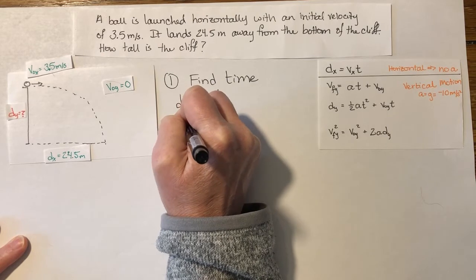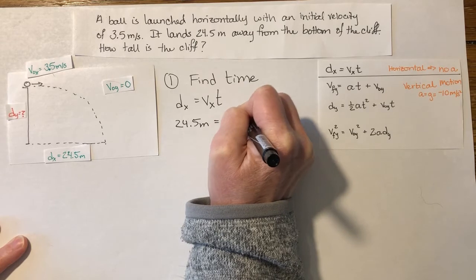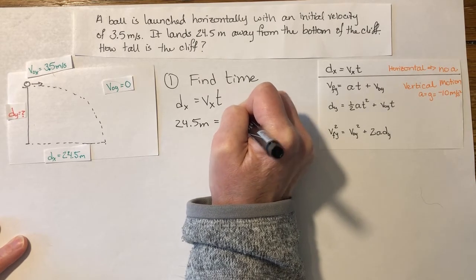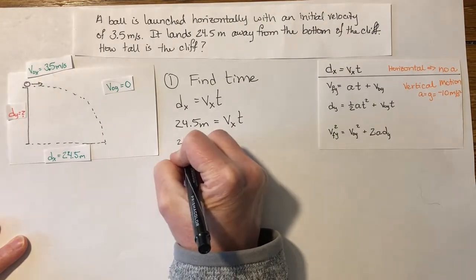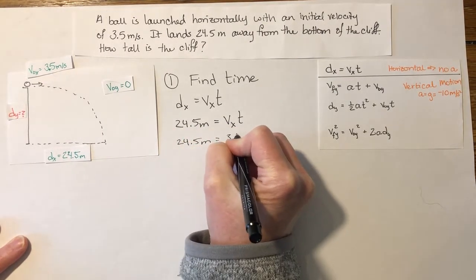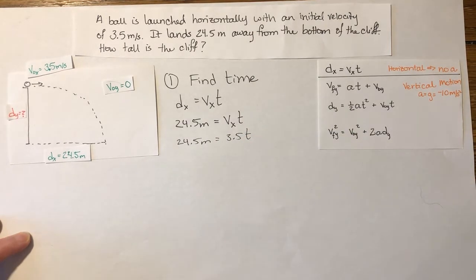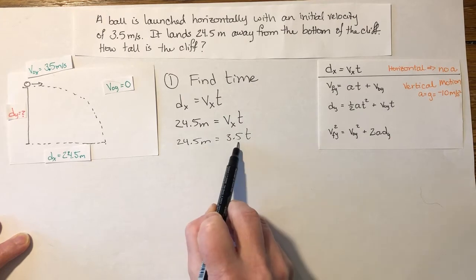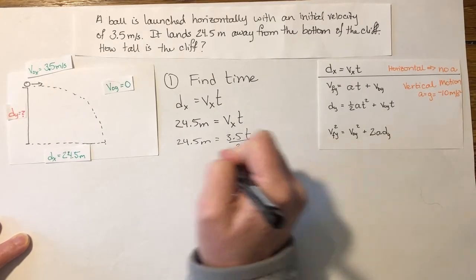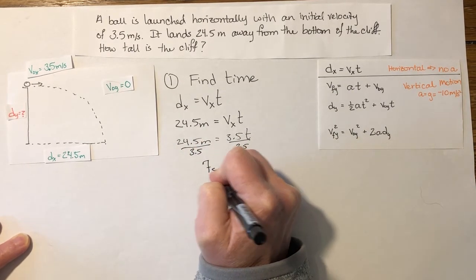dx is 24.5 meters equals vx times t. vx was 3.5 meters per second. So if I divide both sides by initial speed in the x direction, I get 24.5 divided by 3.5. And I find that the time is 7 seconds.